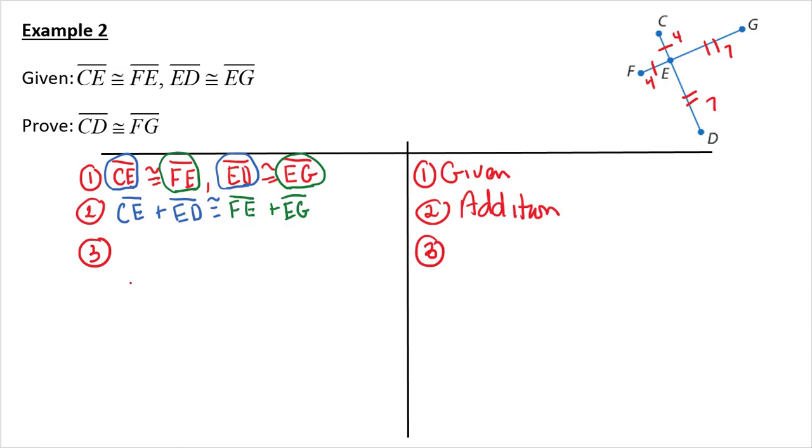Step 3. Remembering to label your steps, having your steps line up. I now need to get the big segments. I know that the big segment CD is equal to or congruent to the two smaller segments being added together. I can say the same thing about FG. The two smaller segments added together equal the bigger segment. And that's our segment addition postulate.